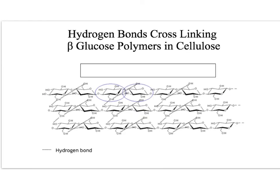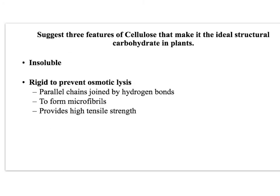Because you've got these long straight chains of cellulose, you can join the chains together by hydrogen bonds — you can see lots of hydrogen bonding between the chains. As each chain is held onto the others, it makes the molecule very strong, forming a microfibril. So you have long, straight, parallel chains joined by hydrogen bonding, which is the structural carbohydrate in plants.